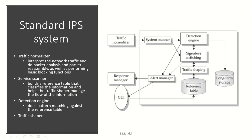If signature matching is possible, the signature matcher checks whether an existing signature matches the traffic or not. Otherwise, it goes to the detection engine, which tries to detect threats using machine learning and other methods. The result is then sent to the traffic shaper, which communicates with the reference table.